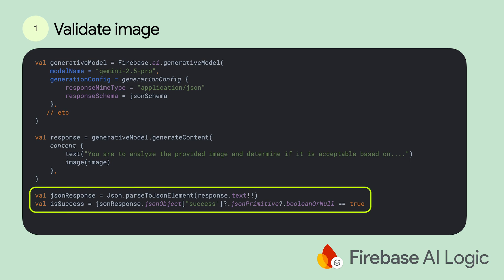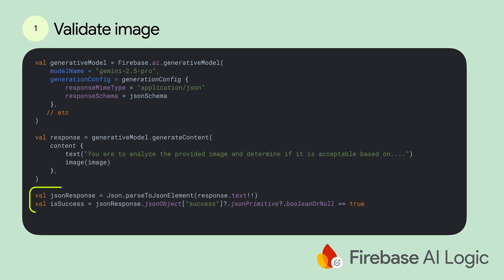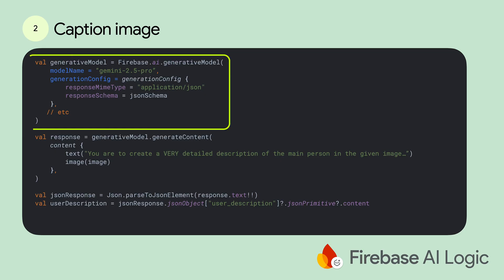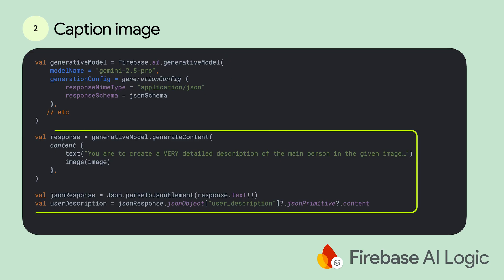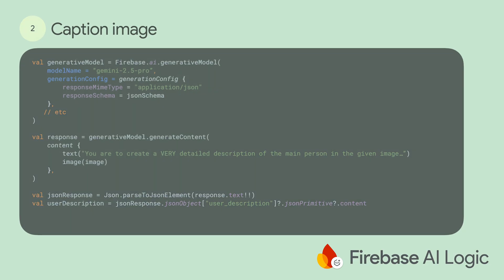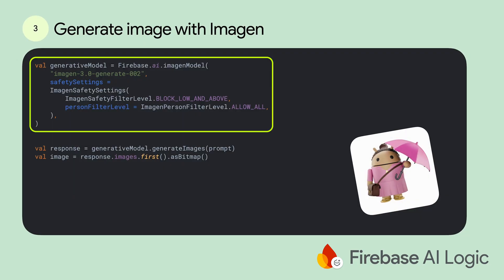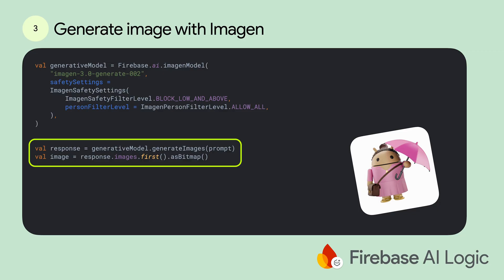We ask Gemini to analyze the image and determine if it's acceptable based on a bunch of criteria. We also use the option of having the result returned as JSON, and we pass this into a successful response or not. Once we've determined it's acceptable, we make another call to Firebase to caption the image, giving us a very detailed description of what the person is wearing — things like the color of your hair or the color of your shirt. Then we call Imagine with the prompt generated from the previous steps, which gives us a bunch of images as a result that we can display to the end user. In our case, we just pick the first result. And that covers the workflow of the app in general.